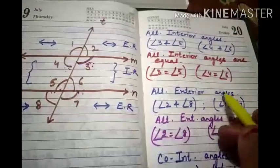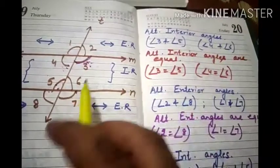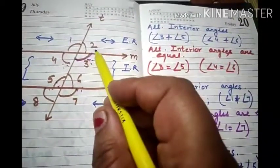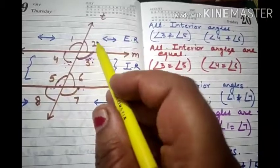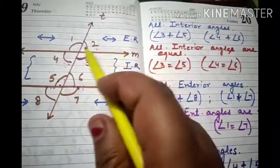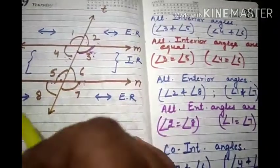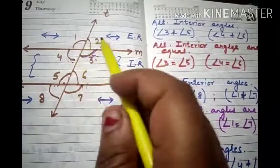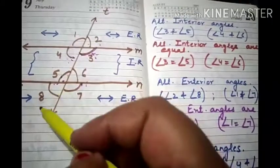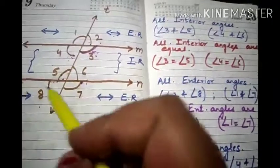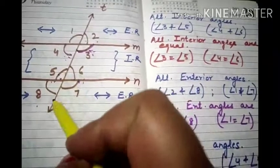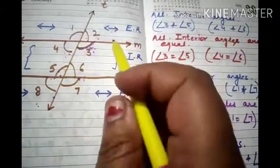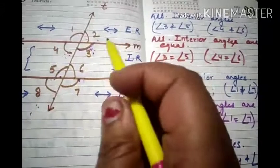Now, alternate exterior angles. Angle 2 is on one side of the transversal, and angle 8 is on the other side — so angle 2 and angle 8 are alternate exterior angles. Similarly, angle 1 and angle 7 are alternate exterior angles.